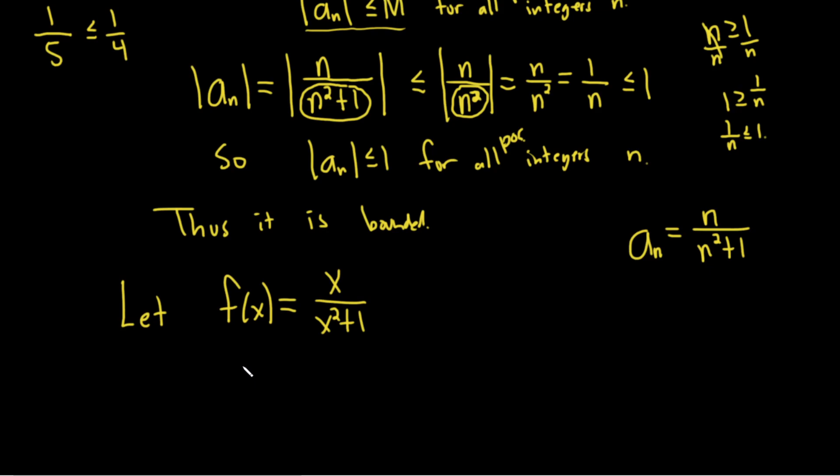Remember, if the derivative is positive on an interval, the function is increasing on an interval. If the derivative is negative on an interval, the function is decreasing on an interval. So let's go ahead and take the derivative and see what comes from that. And just recall that there is a formula for the derivative of a quotient.